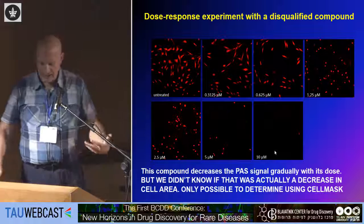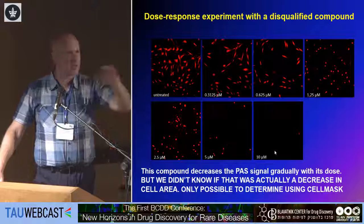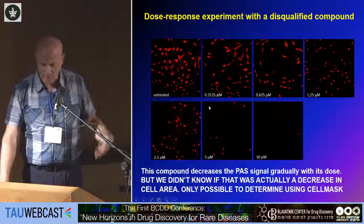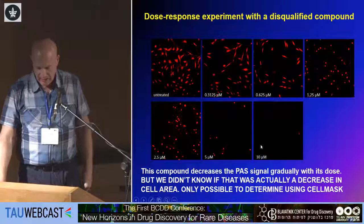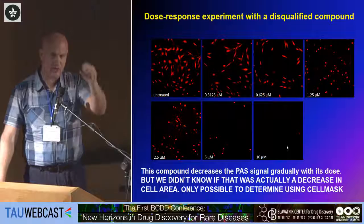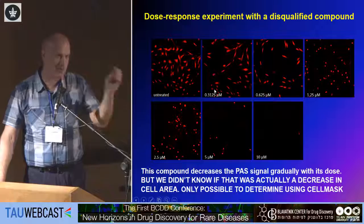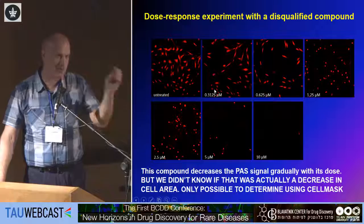A very good example of a false positive: we screened drugs for their ability to reduce polyglucosans. For one drug, there appeared to be a very nice dose response, as it reduced the staining of polyglucosans. However, this actually showed a reduction in cell area — this compound was cytotoxic. We had to take into consideration the cell mask or cytosol staining to see that the compound was simply reducing cell size.